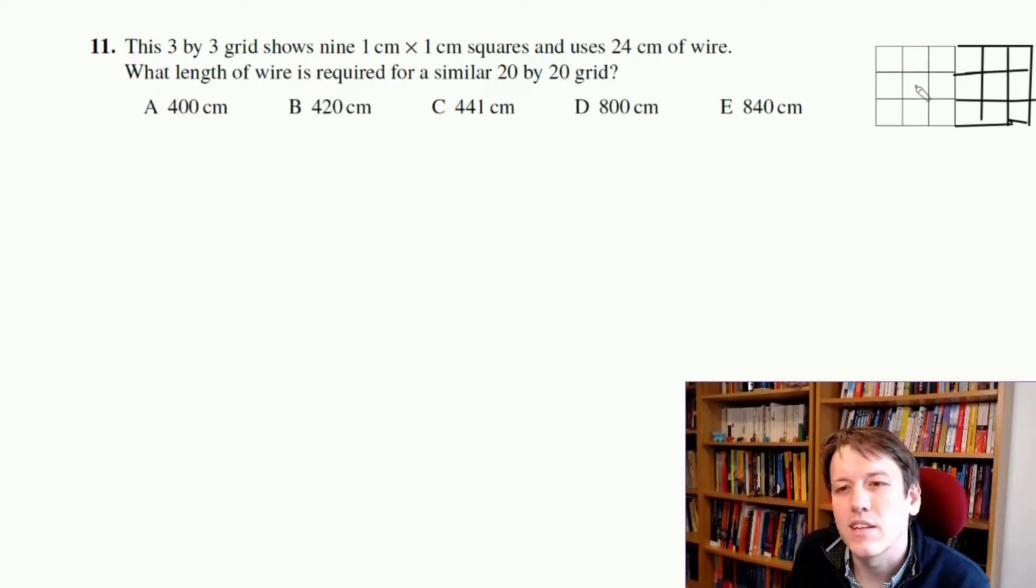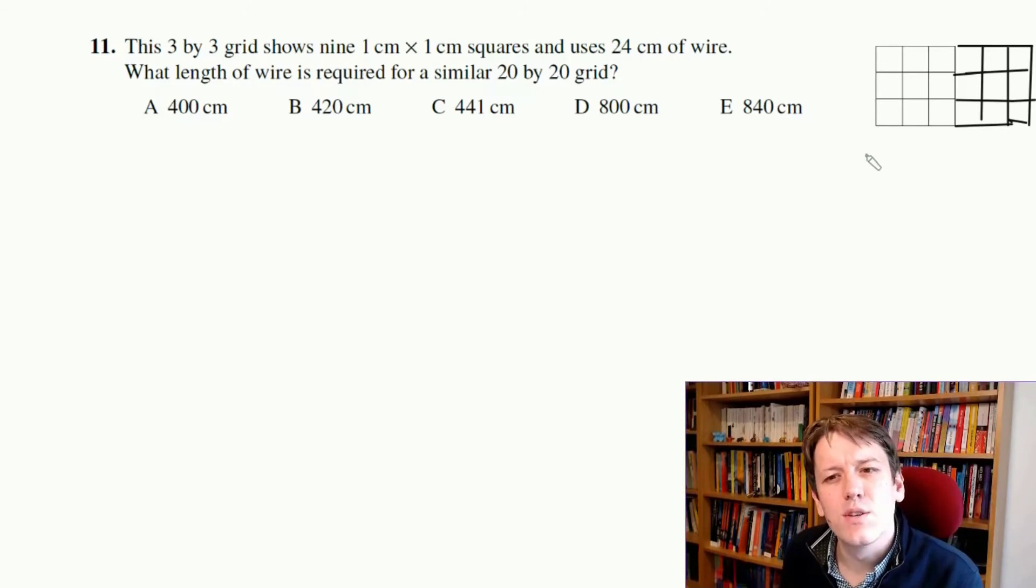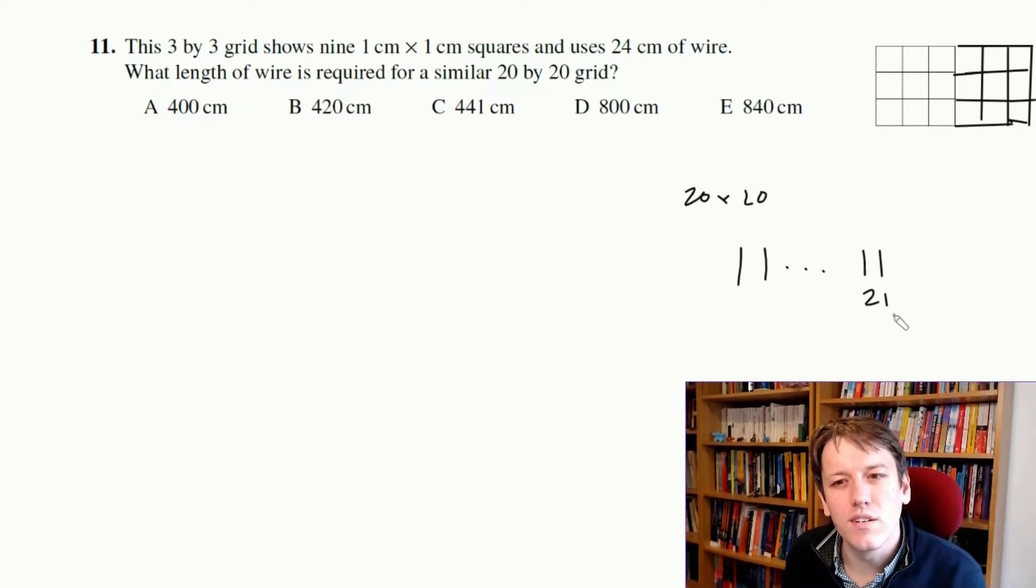there were 4 vertical lines. Like if I go to 6 squares across, there's now 7 vertical lines, so there's always one more vertical line than there are the number of squares, so if I go to 20x20, there are going to be 21 vertical lines, and similarly for the horizontal ones, there's one more than the number of squares.